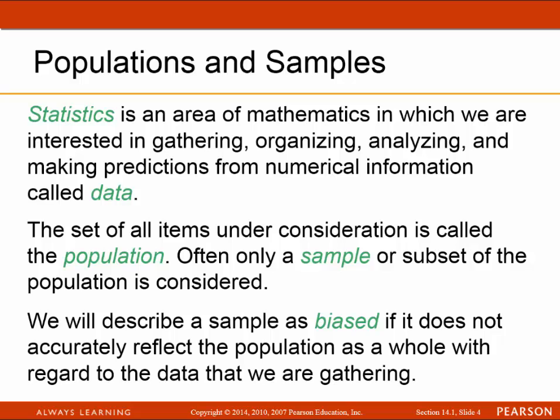In real life, it's nearly impossible to get the entire population, and that's why samples are used probably 99.9% of the time. If the entire population is used, that's called the census. Sample bias means that something happened either in the collection of the sample or the questions that caused the sample to not accurately reflect the population.